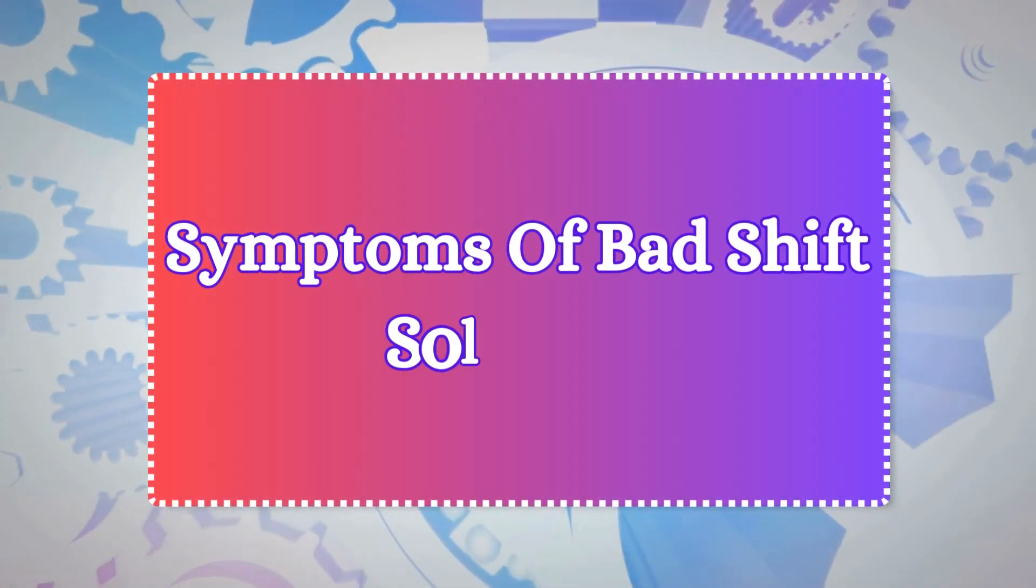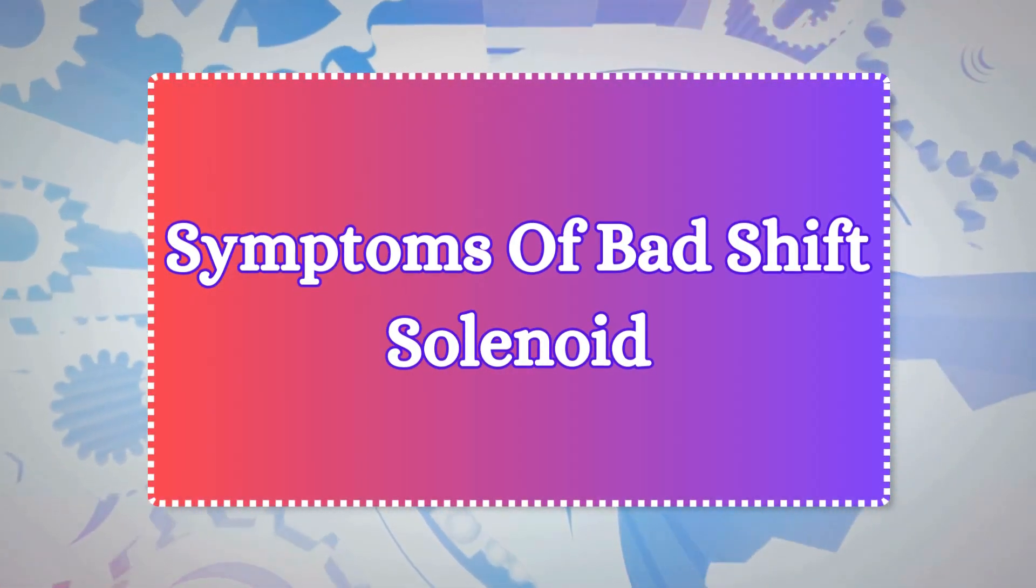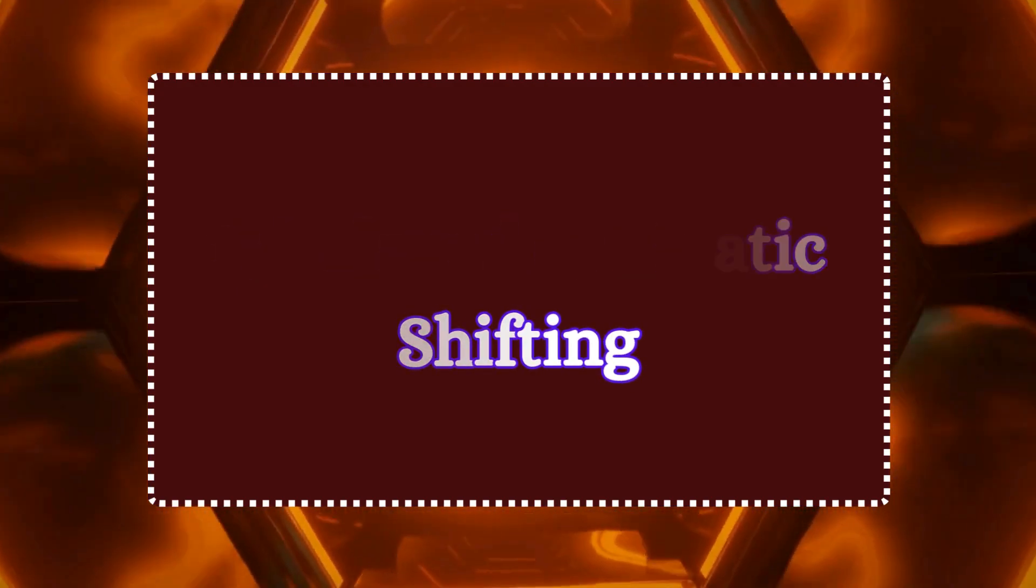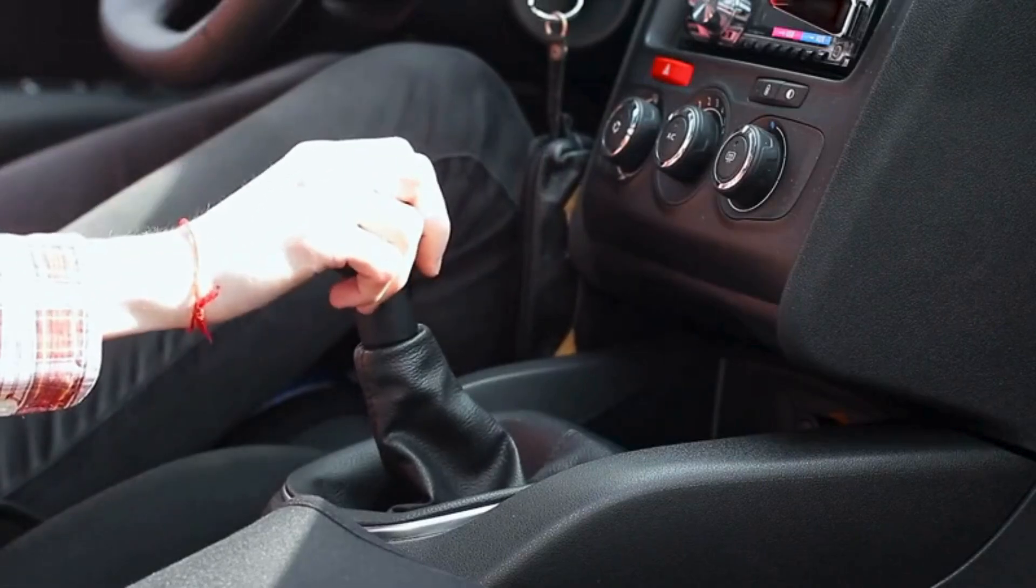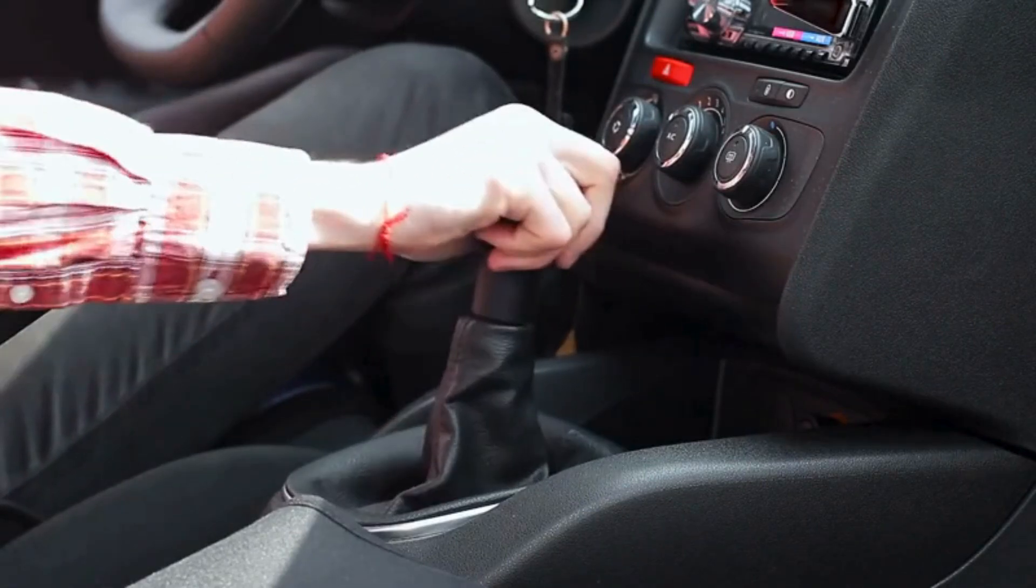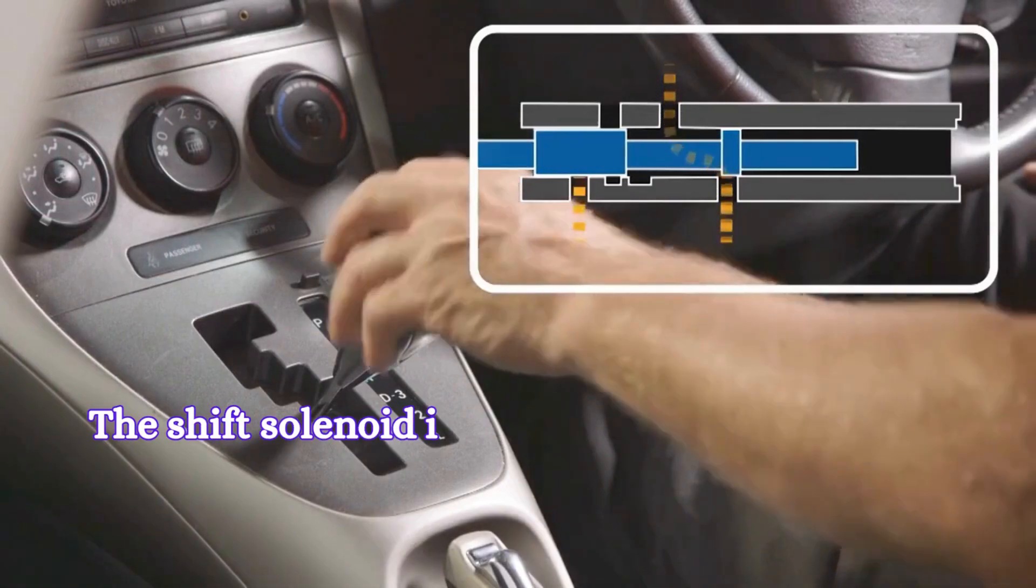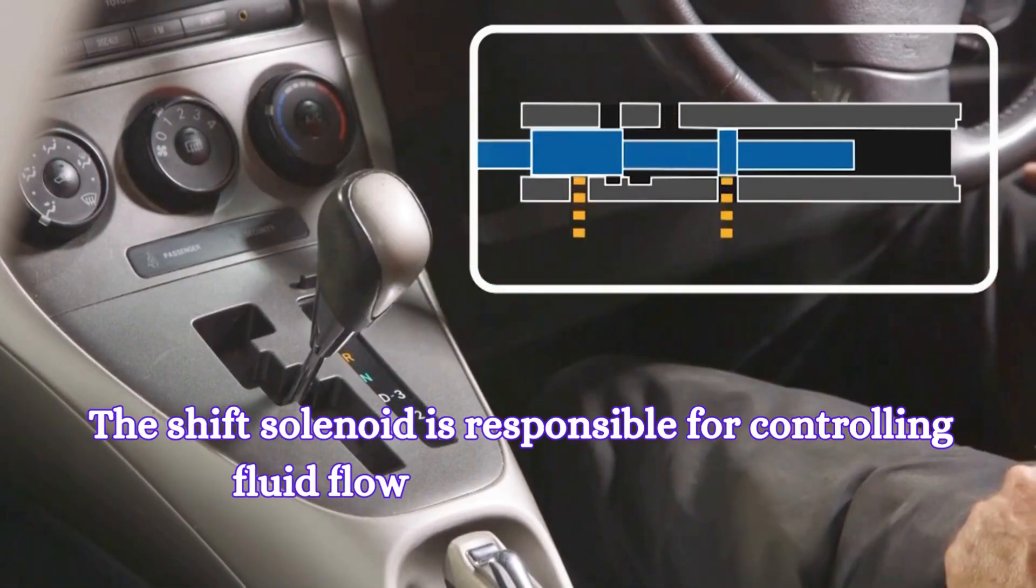Now let's discuss the common symptoms of a bad transmission shift solenoid. One, delayed or erratic shifting. If you notice that your car takes longer to shift gears or if it shifts unpredictably, that's a big red flag. The shift solenoid is responsible for controlling fluid flow in your transmission, and when it fails, your car might struggle to find the right gear.